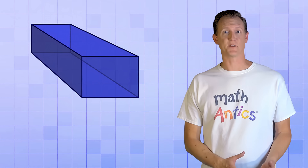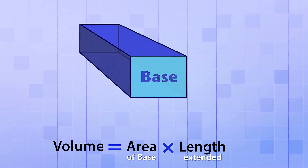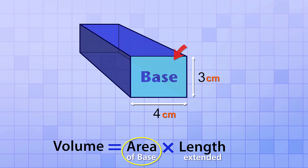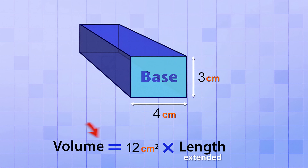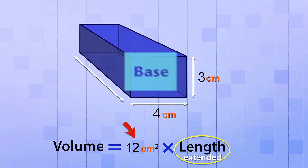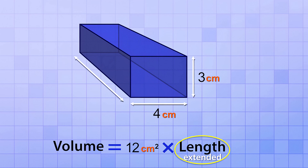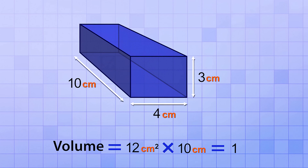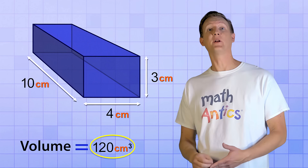Let's calculate the volume of a rectangular prism. The base is a rectangle with dimensions 4 cm by 3 cm, so its area is 4 cm times 3 cm, which gives us 12 cm squared. To find the volume, we multiply that area by the length the base was extended, which is 10 cm. So 12 cm squared times 10 cm gives us 120 cm cubed. This rectangular prism has a volume of 120 cubic centimeters.